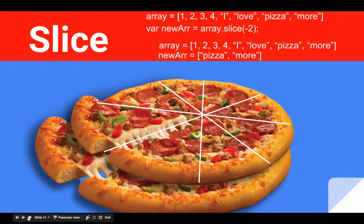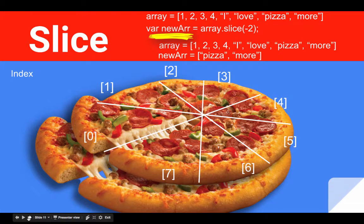Another interesting way you can use the slice method is by using a negative number to remove slices from the end of the array. So for example, here we have our eight slices of pizza again, indices zero through seven. If we declare a new variable, var newArr, and we set that equal to the original array.slice(-2), what we end up with is a copy of the last two elements of the array. So we would remove index seven and index six from our original array and copy that into our new array.